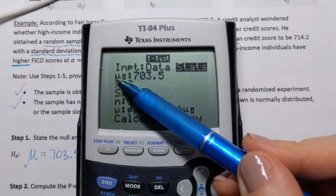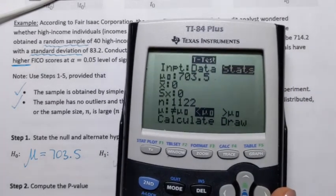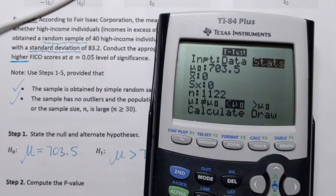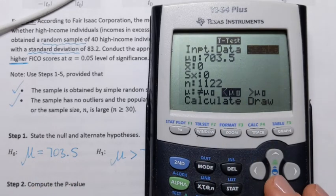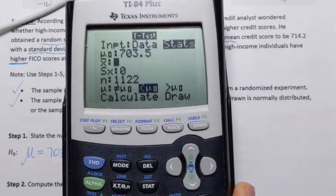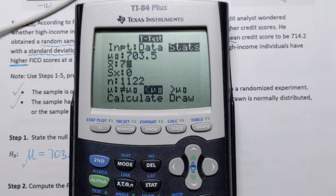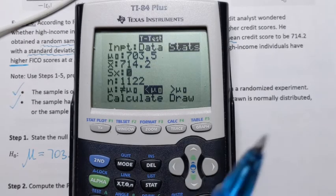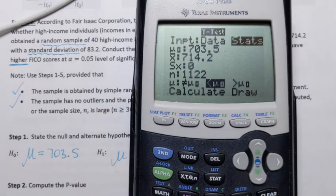But before that, we need to enter mu sub zero. Well, that is the value. Actually, I already have it here. That is population mean stated in the null hypothesis, 703.5. So make sure you enter that, 703.5. Next, sample standard deviation, 714.2. Sample standard deviation, right here, 83.2.